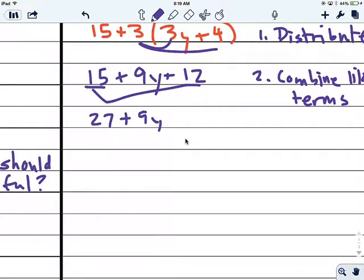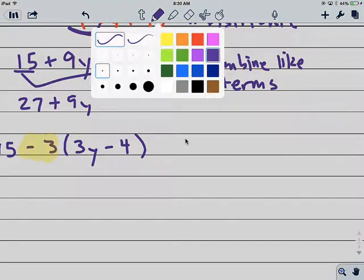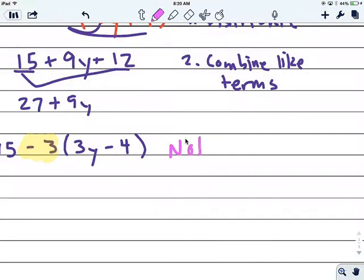There's some common mistakes here, and I think they mostly come up when you're dealing with negatives. So let's say you're dealing with 15 minus 3 times 3y minus 4. When you're dealing with the distribution first, you have to notice that this is actually a negative 3. So I'm going to write over here, notice negatives when distributing.